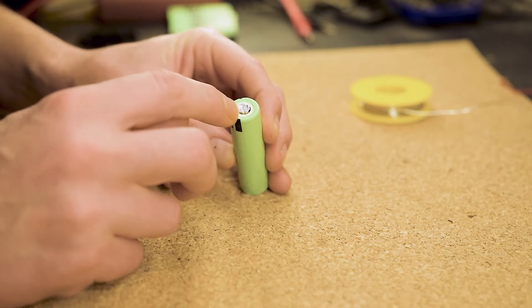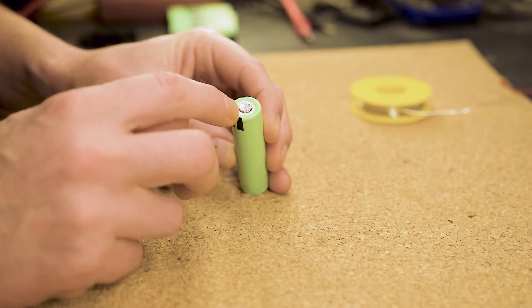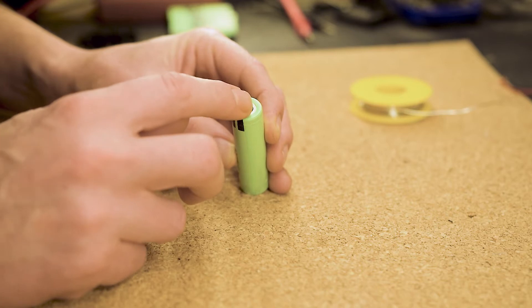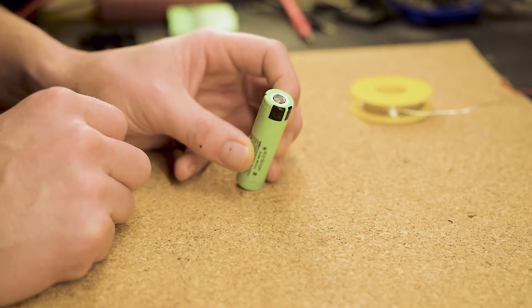That means when vibrations or mechanical strain destroy the heat shrink tubing, the cell is likely to produce a short circuit, which is something you don't want to happen with a lithium cell.